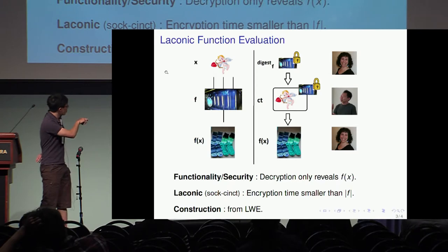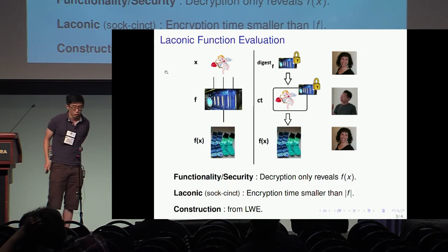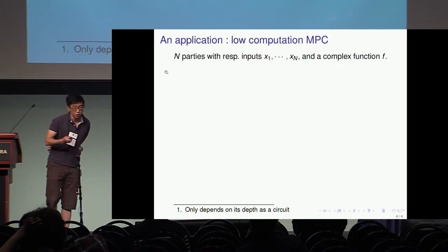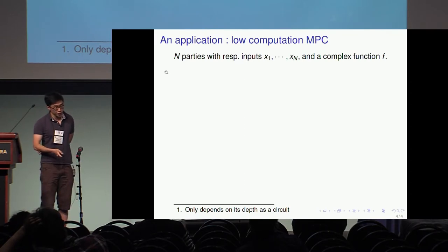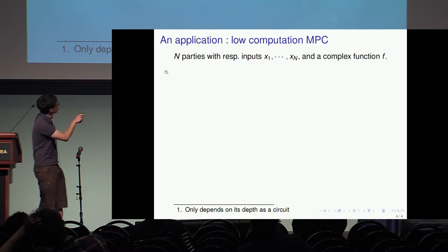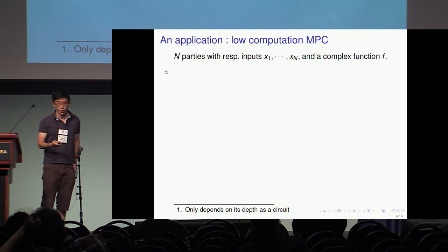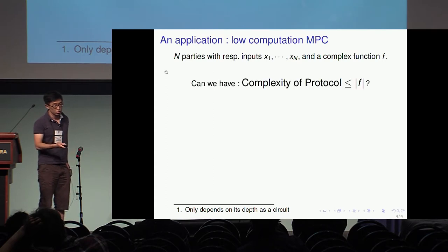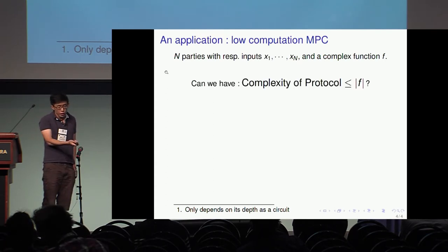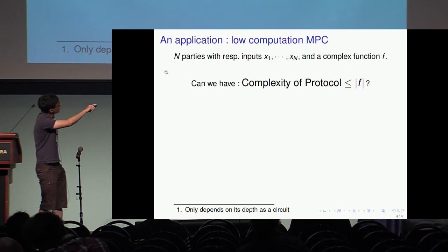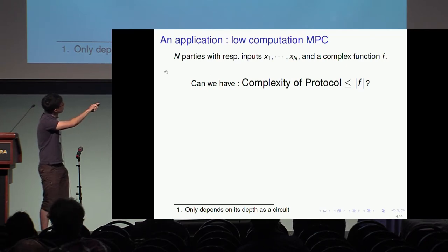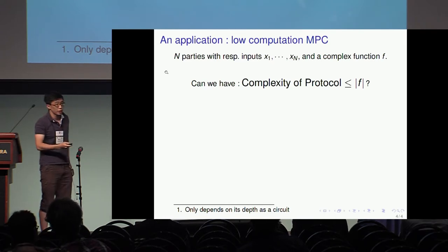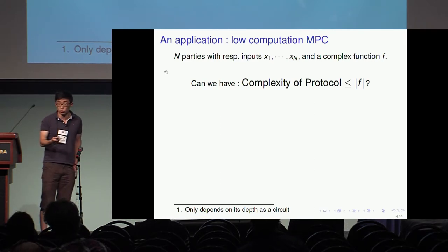We manage to construct such a primitive from LWE. More seriously, an application I'm pretty excited about is in MPC, where we have n parties with inputs x1 through xn and a large function f. The question is whether we can compute a protocol to compute f of x1 up to xn in time much less than the circuit size of f.